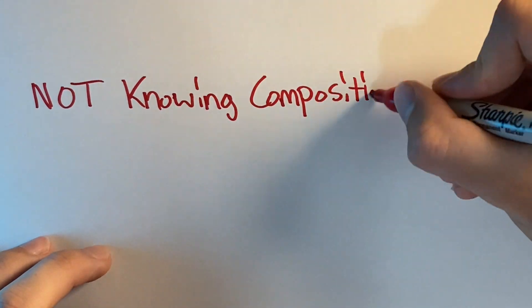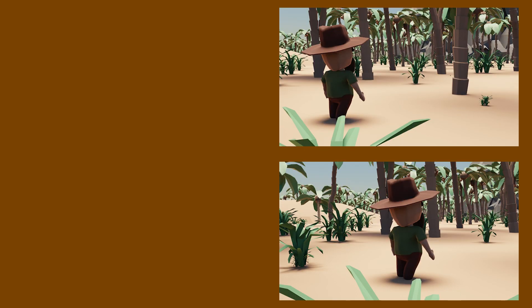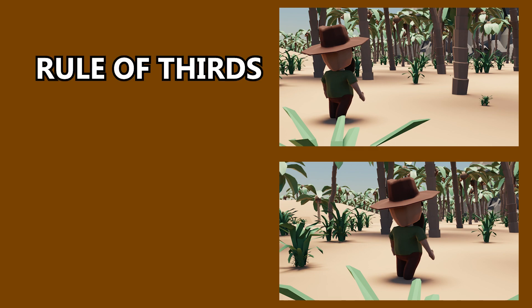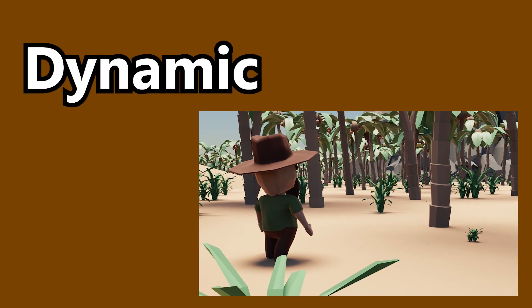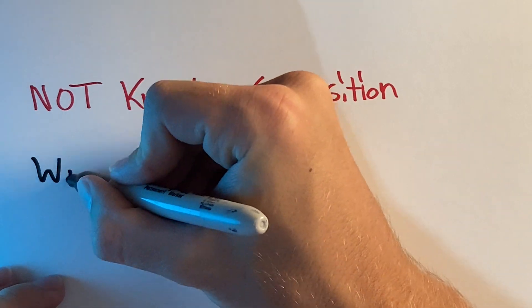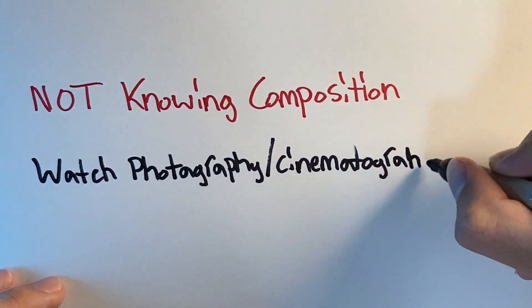Mistake five: not knowing composition. This single thing can drown your renders — you could have the best models ever and the render would still look horrible if you don't know how to frame it. I have two renders of the exact same scene: one uses the rule of thirds, and the other places the subject directly in the center. The rule of thirds looks much more dynamic and aesthetic. Do a little research on composition; there are some great photographers on YouTube I recommend looking into.